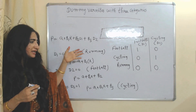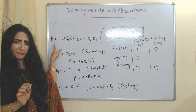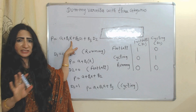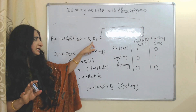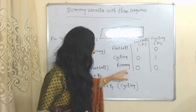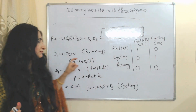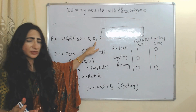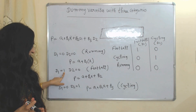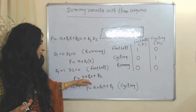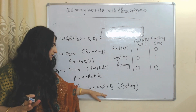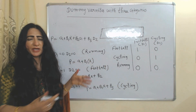Now we will put all these values into the equation and see average performance in running, cycling, and football. P represents average performance, the intercept, and X represents experience. We can easily measure experience in terms of numbers, so experience is not a dummy variable. We have two dummy variables: D1 represents football and D2 represents cycling. If both D1 and D2 equal zero, it shows average performance in running. If D1 equals one and D2 equals zero, it shows average performance in football. If D1 equals zero and D2 equals one, it shows average performance in cycling.